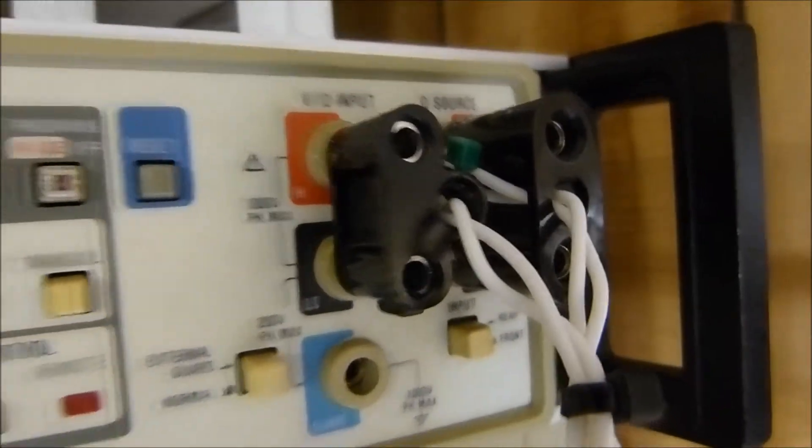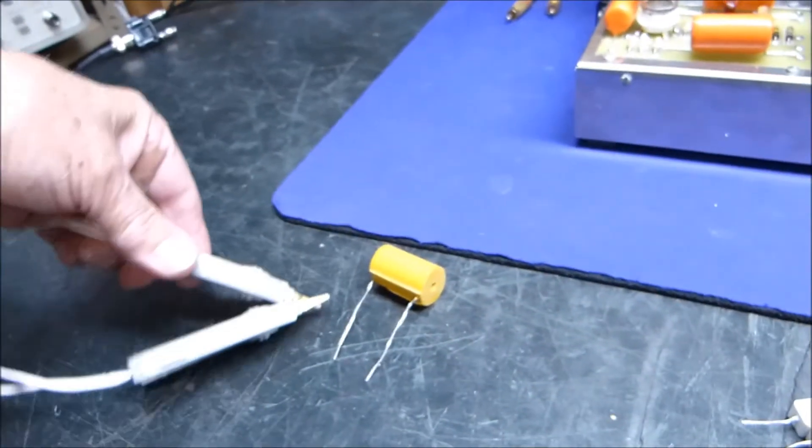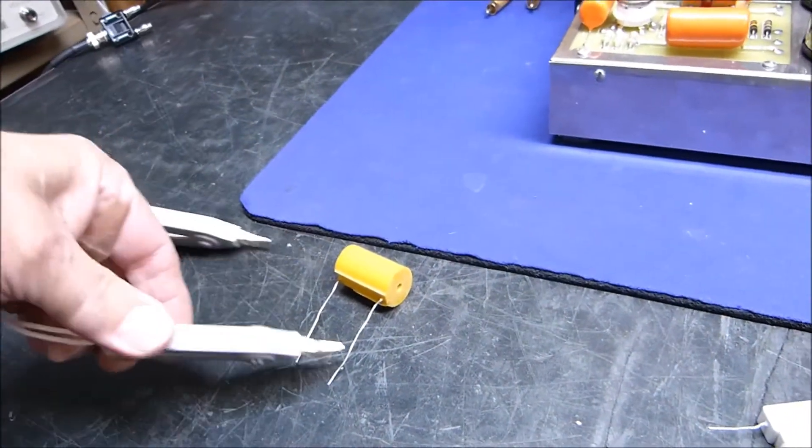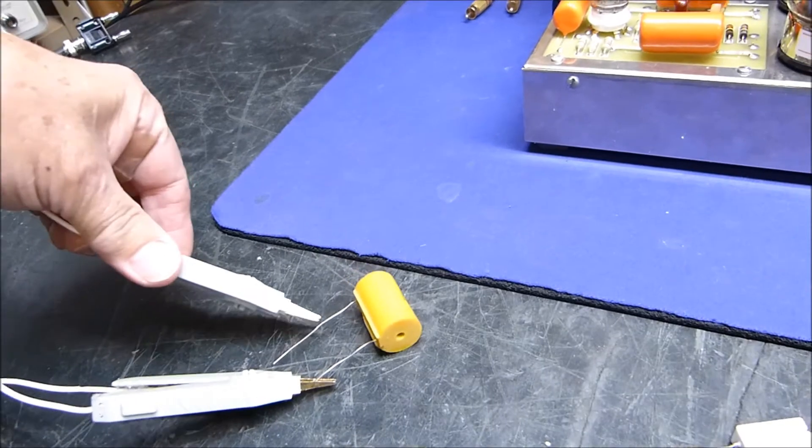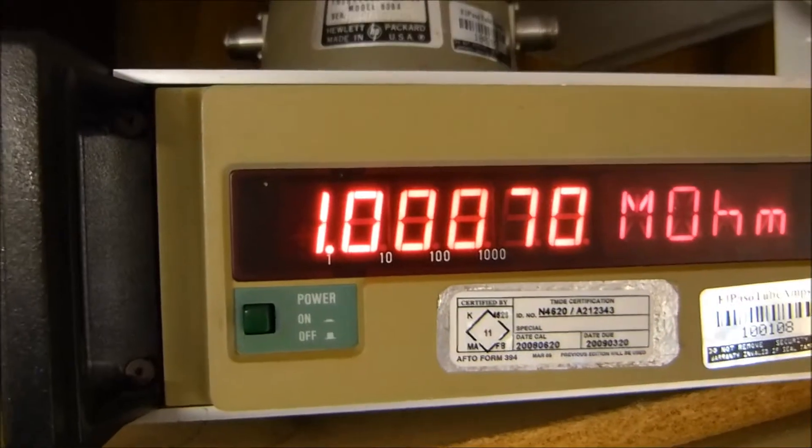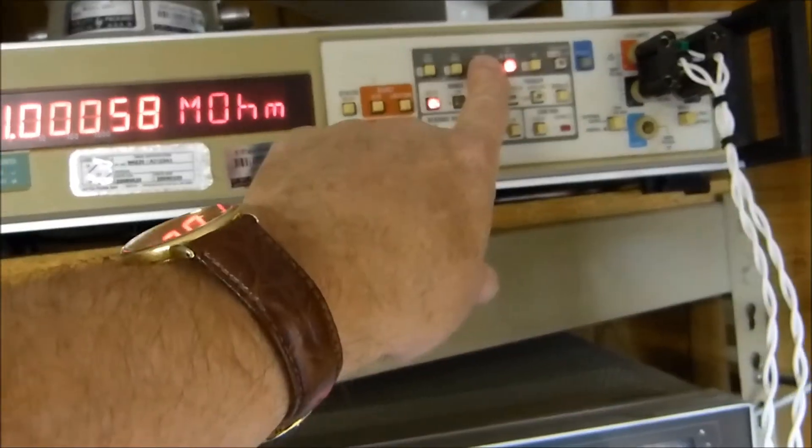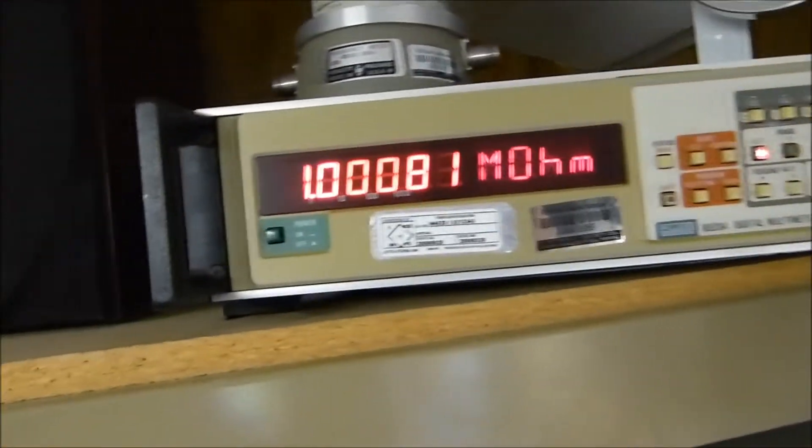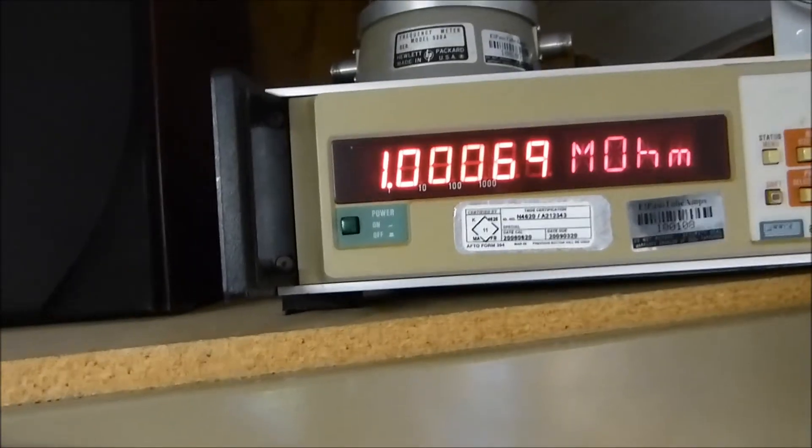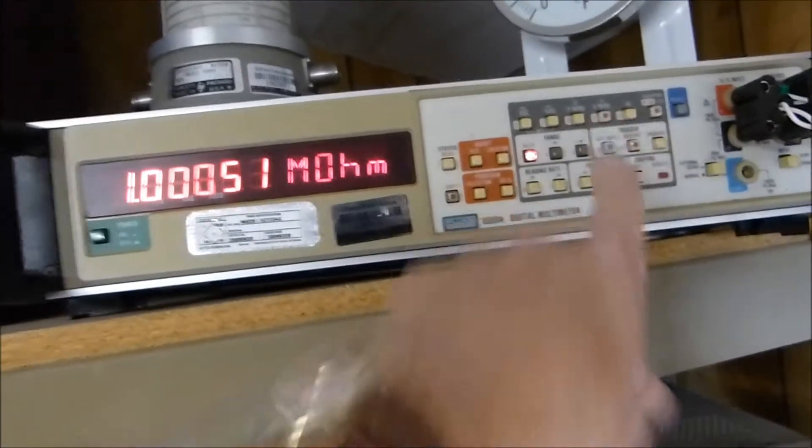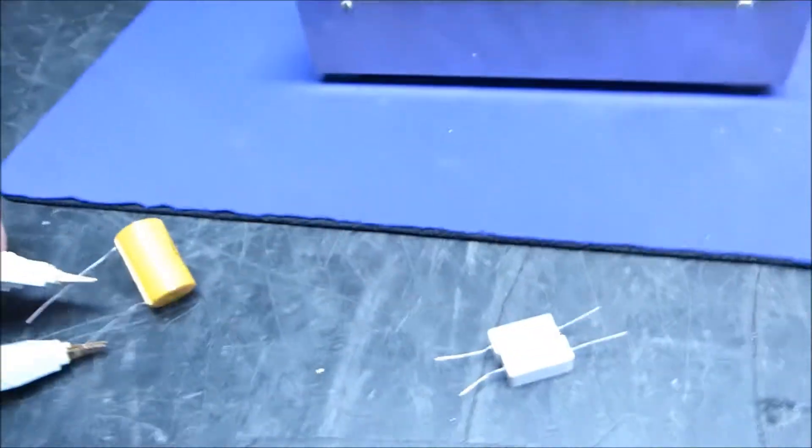Let's look at some high-value resistors too. These are one megaohm, one-tenth of one percent. See, there's 1.000. Let's put this in two-wire and see what happens. Well, this is a good meter, it measures the same up there.